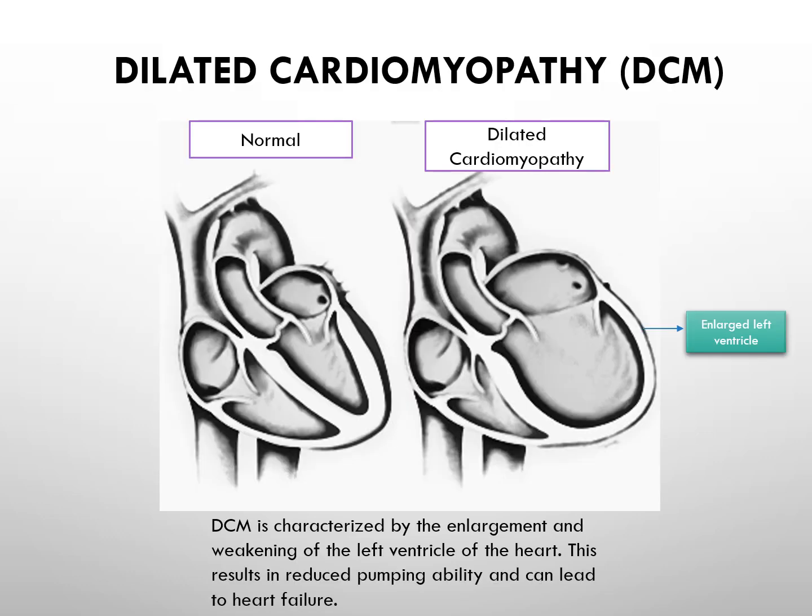Dilated cardiomyopathy is characterized by the enlargement and weakening of the left ventricle of the heart. This enlargement disrupts the normal structure and function of the heart, reducing its pumping efficiency. As the heart muscle weakens and becomes less efficient, it struggles to pump blood effectively. This can lead to reduced ejection fraction, which is a measurement of how much blood is pumped out of the heart with each contraction.